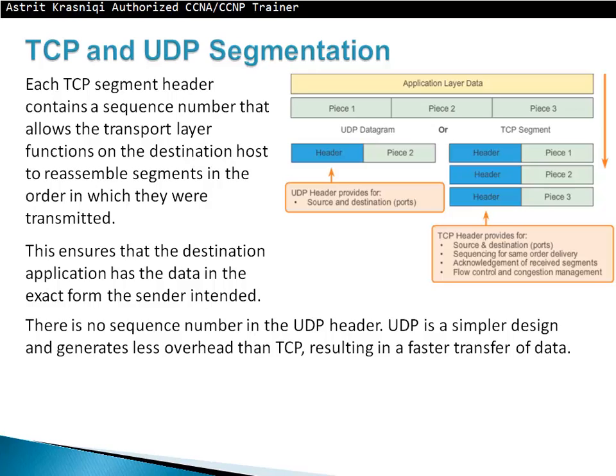TCP and UDP segmentation: each TCP segment header contains a sequence number that allows the transport layer at the destination to reassemble segments in the order they were transmitted, ensuring the destination application has data in the exact form the sender intended. There are no sequence numbers in the UDP header. UDP is a simpler design generating less overhead than TCP, resulting in faster data transfer. UDP has only source and destination ports, while TCP adds sequence numbers, acknowledgement, and flow control fields.